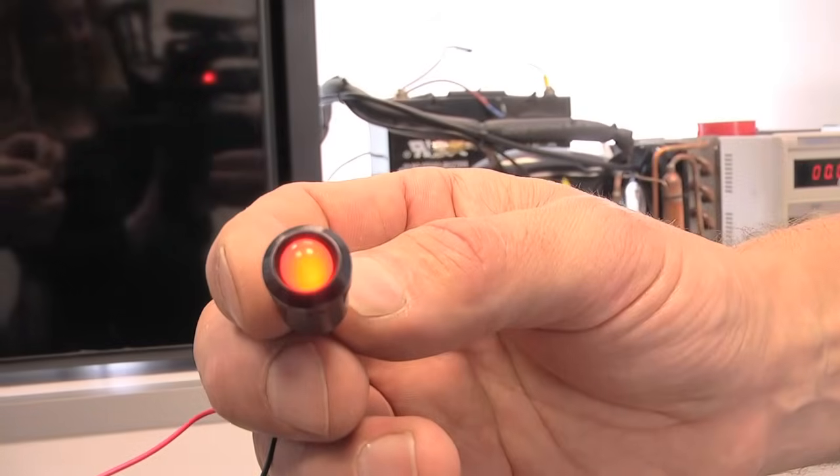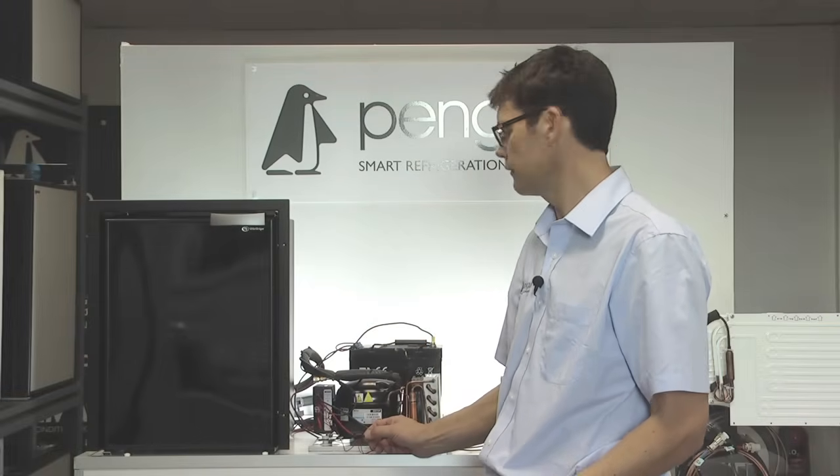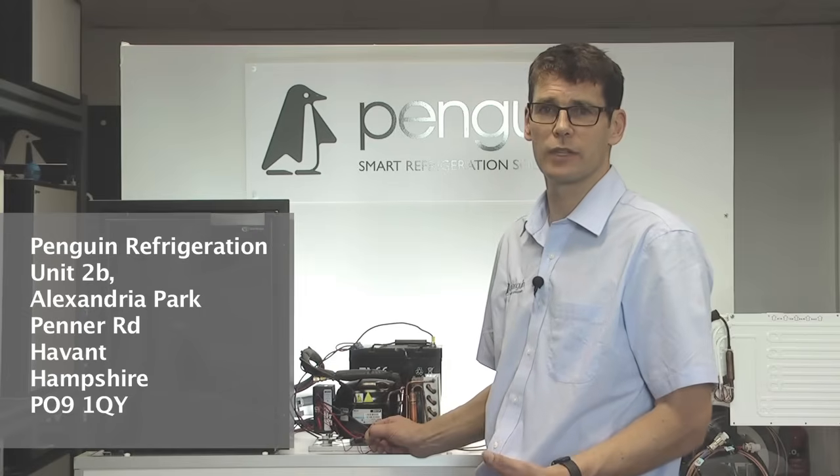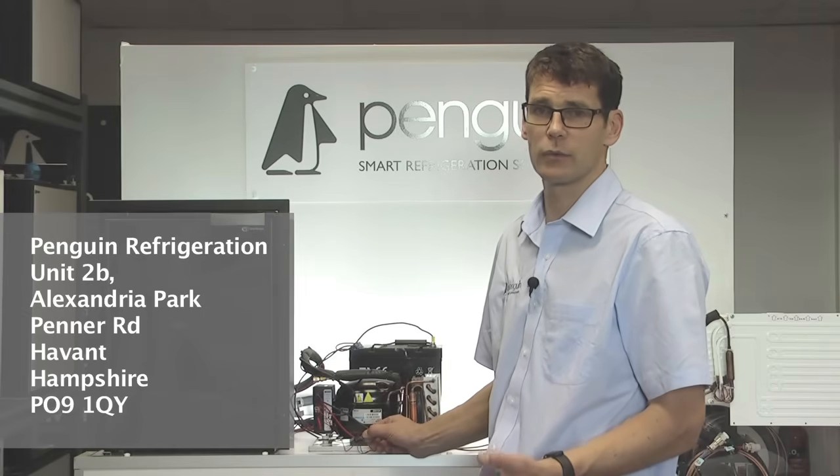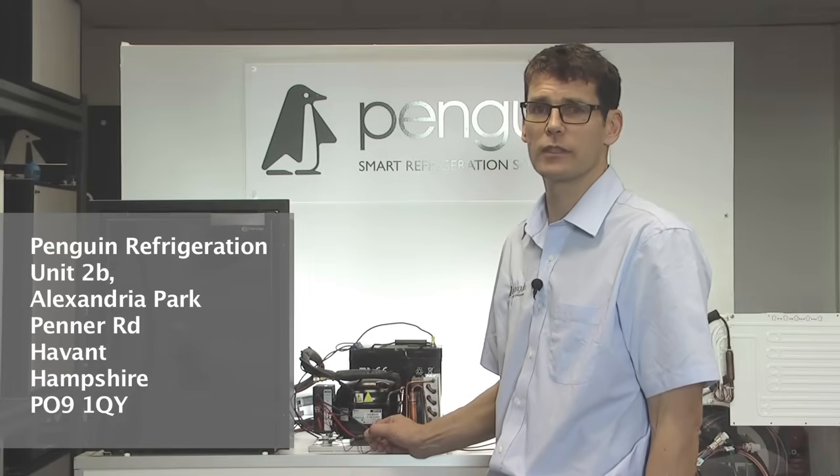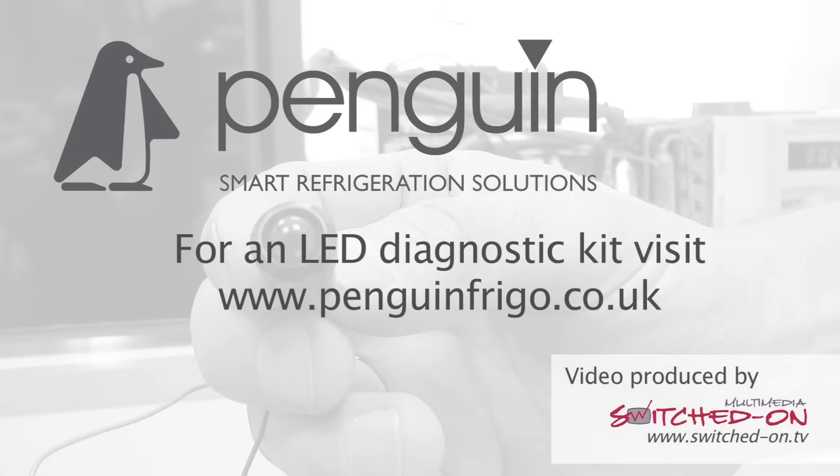We're not going to demonstrate fault codes 4 and 5, because they both relate to either a failed controller or an issue with the refrigerant. And what we would generally suggest, if you are getting fault codes 4 or 5, would be to take the controller off and post it back to us. We can then replicate the test, and if we get the same results, it's a new controller. If we don't, that would suggest that perhaps there's something at fault with your refrigerant system, and you would need to call in a refrigeration engineer.